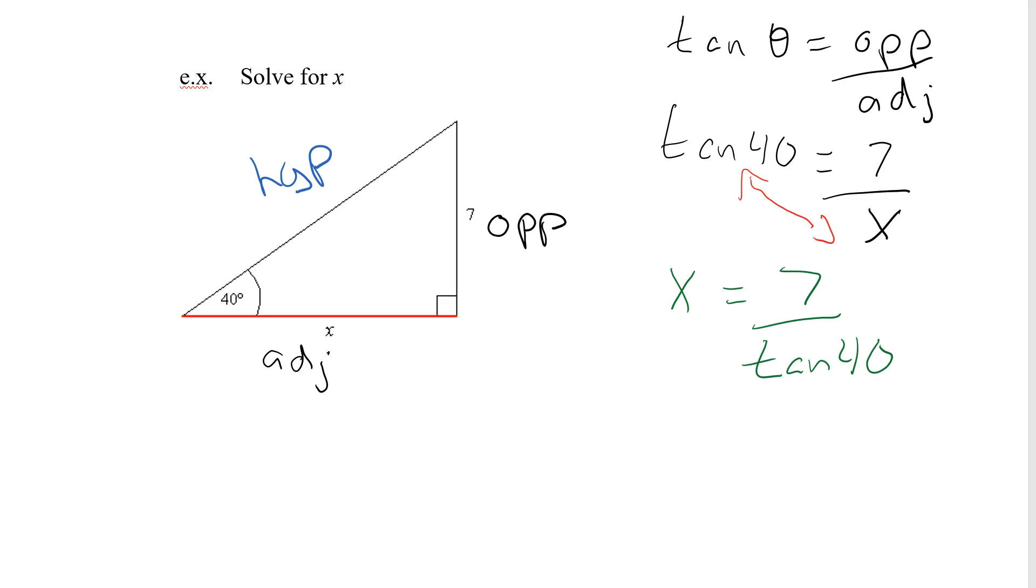So I'm going to plug that in. x equals 7 divided by 0.8391. And then I go to my calculator, and I go 7 divided by 0.8391, and my x to one decimal place is 8.3. Now, in this case, I don't have a unit, because I have no unit in my equation, so I can leave it as 8.3.